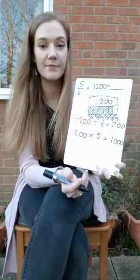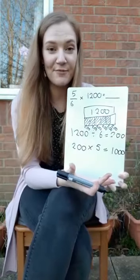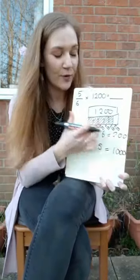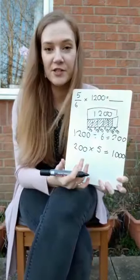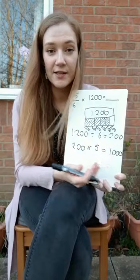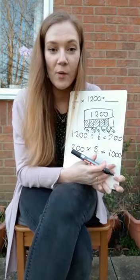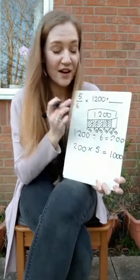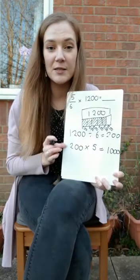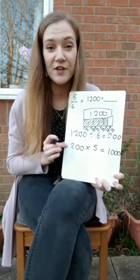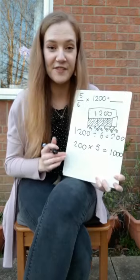There it is — and there I have my answer. I've worked out what five sixths of 1,200 is. The answer is 1,000. I found what one sixth was and then I multiplied it by five to work out the five sixths.